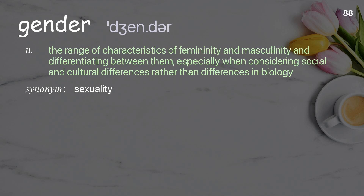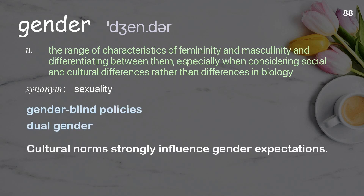Gender: The range of characteristics of femininity and masculinity and differentiating between them, especially when considering social and cultural differences rather than differences in biology. Examples: Gender-blind policies. Dual gender. Cultural norms strongly influence gender expectations.